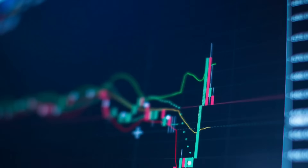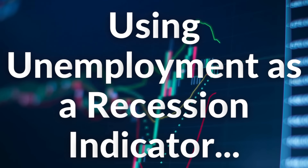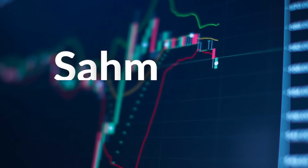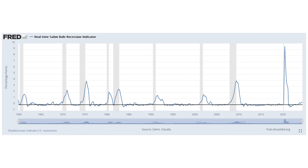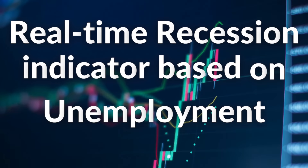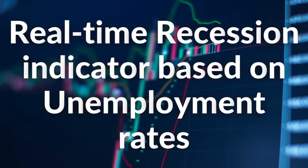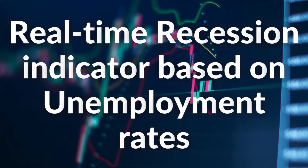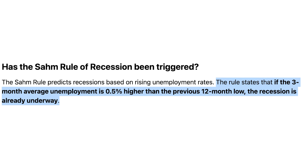Circling back to unemployment — given its importance, there's an indicator that strictly uses unemployment as a means of predicting a recession. This is the SAM Rule recession indicator, which recently has started signaling a recession. It was developed to provide a real-time signal of the start of a recession strictly based on changes in unemployment rate. The rule states that if the 3-month average unemployment is 0.5% higher than the previous 12-month low, then a recession is already underway.